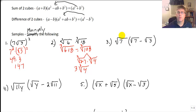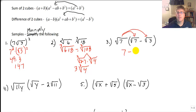Sample problem 3: we're going to distribute radical 7. We know radical 7 times radical 7 is 7, and using our product rule, radical 7 times 3 gives us radical 21. So our answer is 7 minus radical 21.